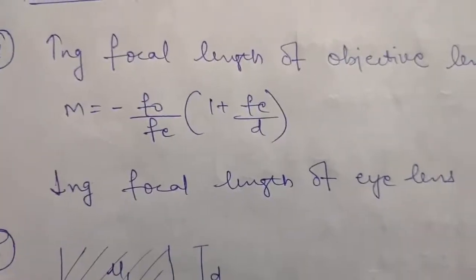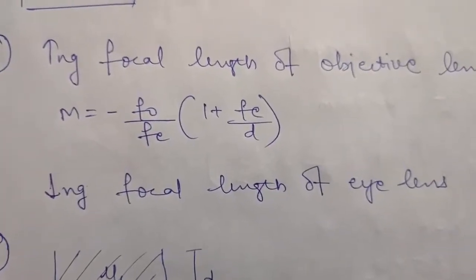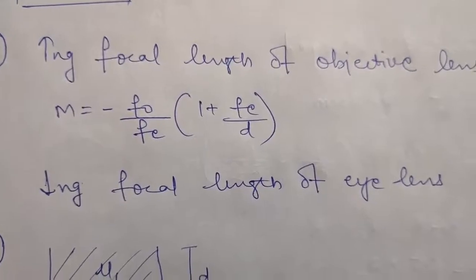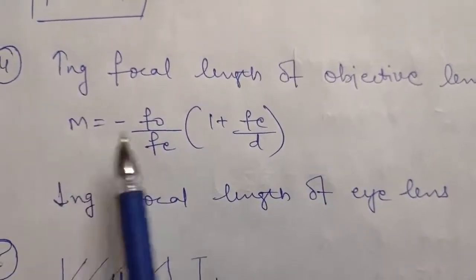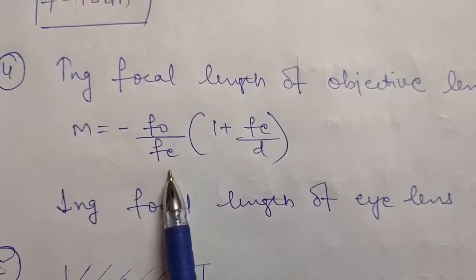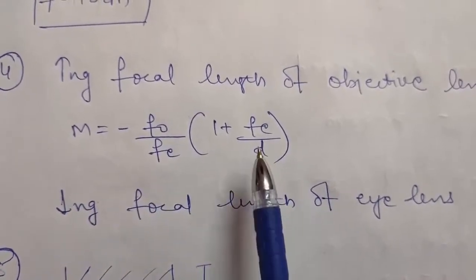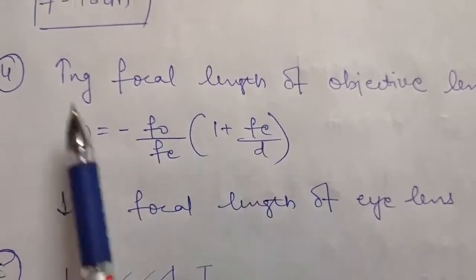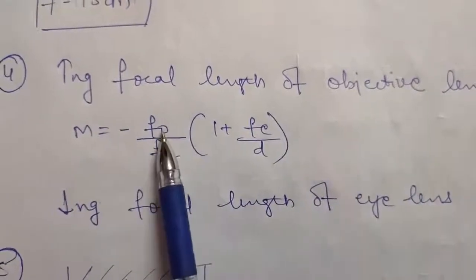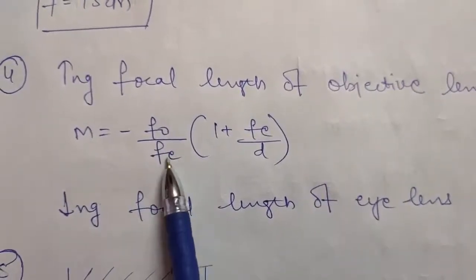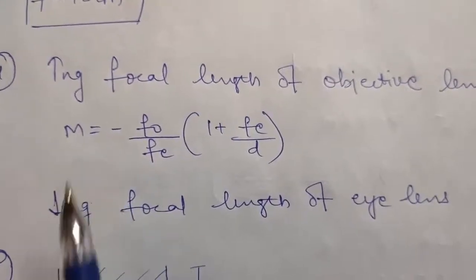In question number 4, it is given: how can you increase the magnification of a telescope? As you have studied, the formula for magnification of a telescope is minus f0 upon fe into (1 plus fe upon d). So you can say, by increasing the focal length of the objective lens or by decreasing the focal length of the eye lens, we can increase the magnification.